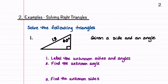We'll now look at two examples, one for each case. For this first example, we're asked to solve a triangle where we're given one side length and one angle — a hypotenuse of 13 and an angle of 60 degrees. The first thing we're going to do is label the unknown sides and angles: the right-hand side as A, the bottom side as B, and the angle opposite side A as alpha.